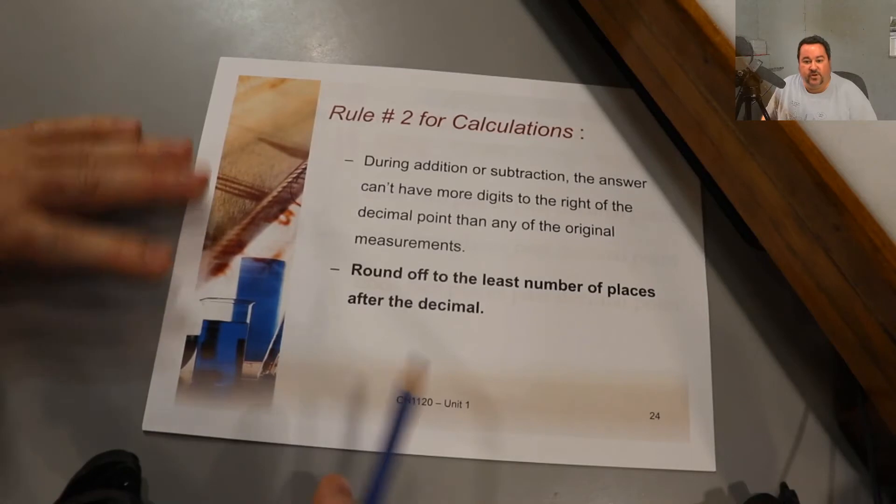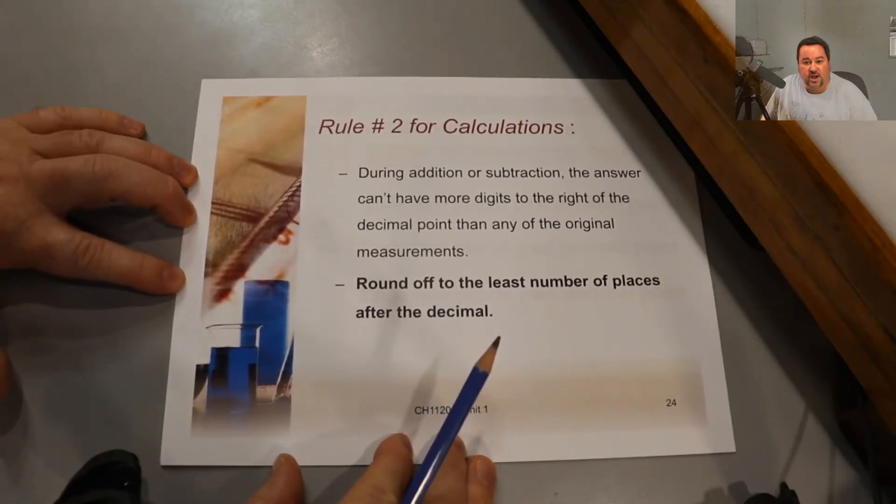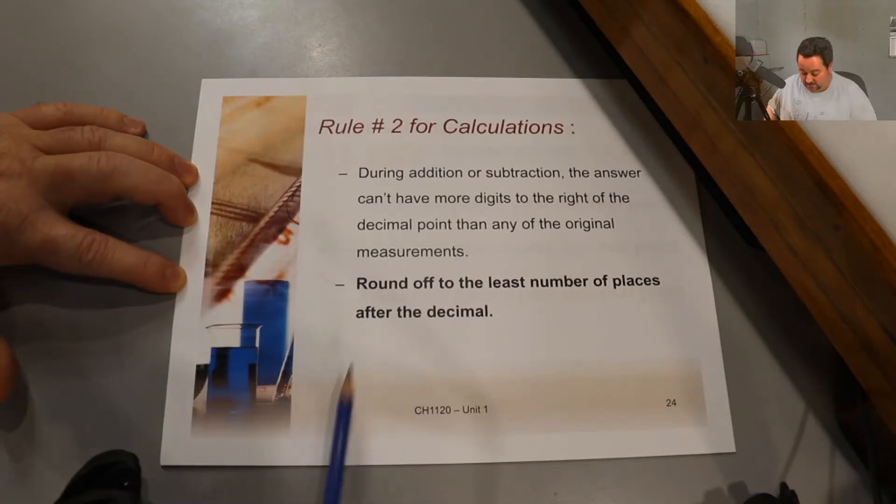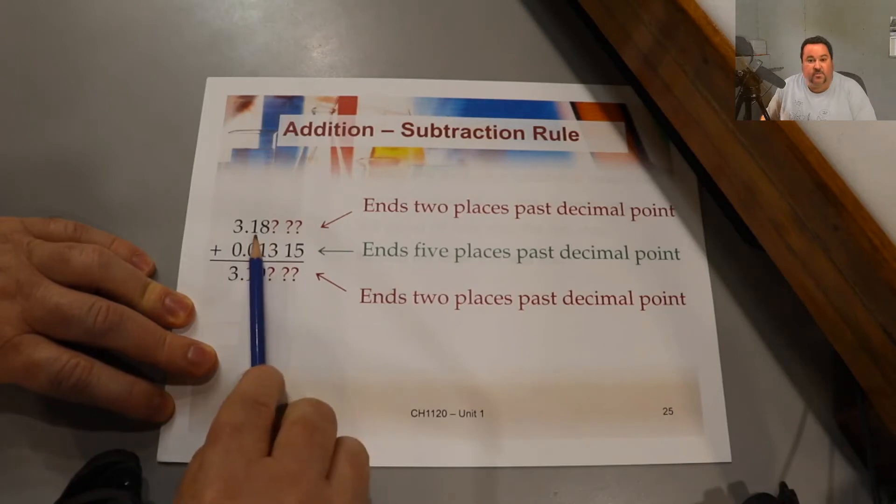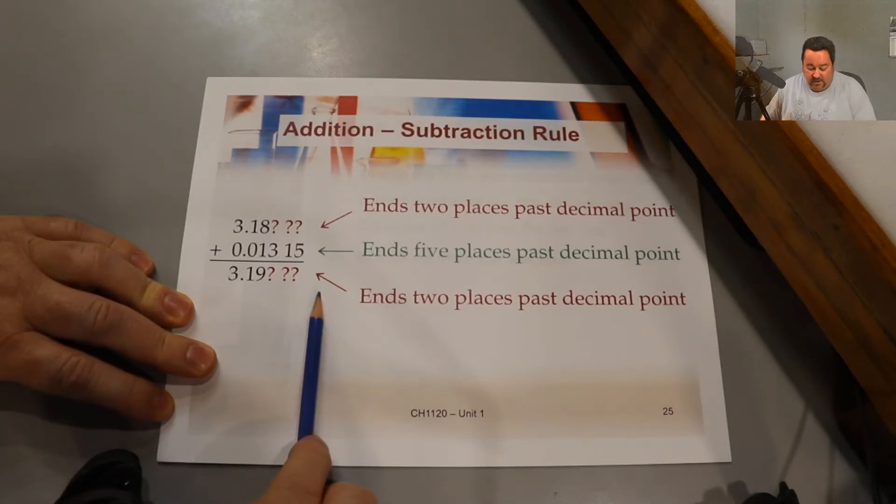The second rule for calculations is for addition and subtraction operations. Whenever we add or subtract, we have to round off the least number of places after the decimal. An example here, the first number has two places after the decimal, the second has five. We report the answer to two places after the decimal. And of course, we would need to add the correct unit, whatever it is.